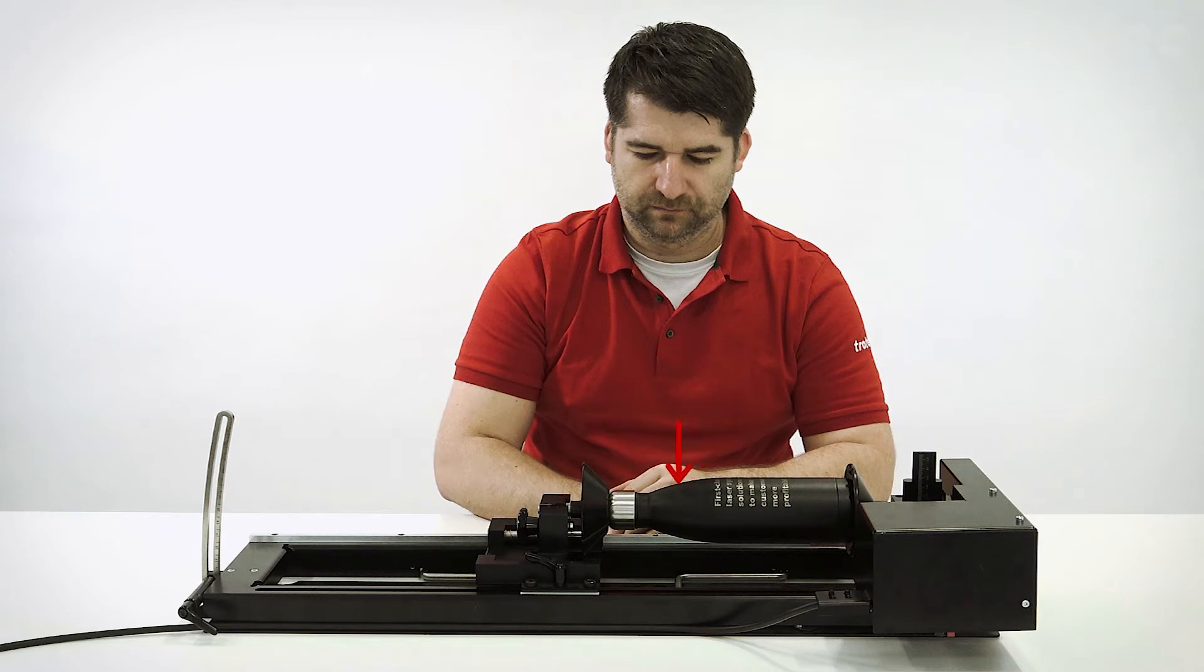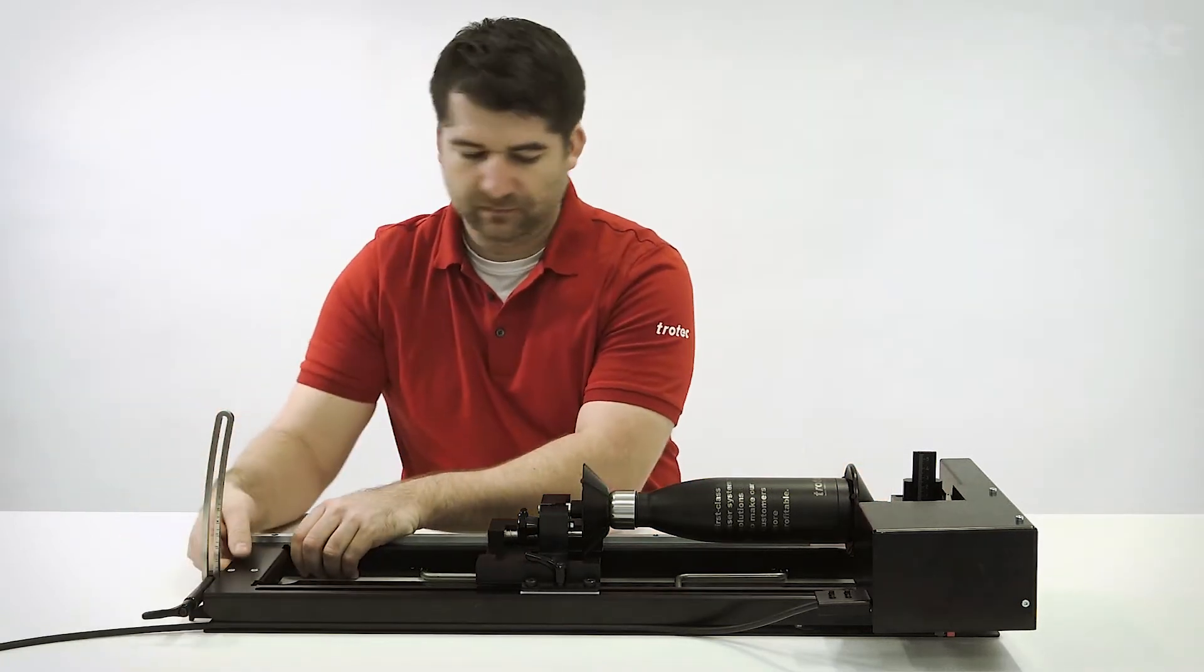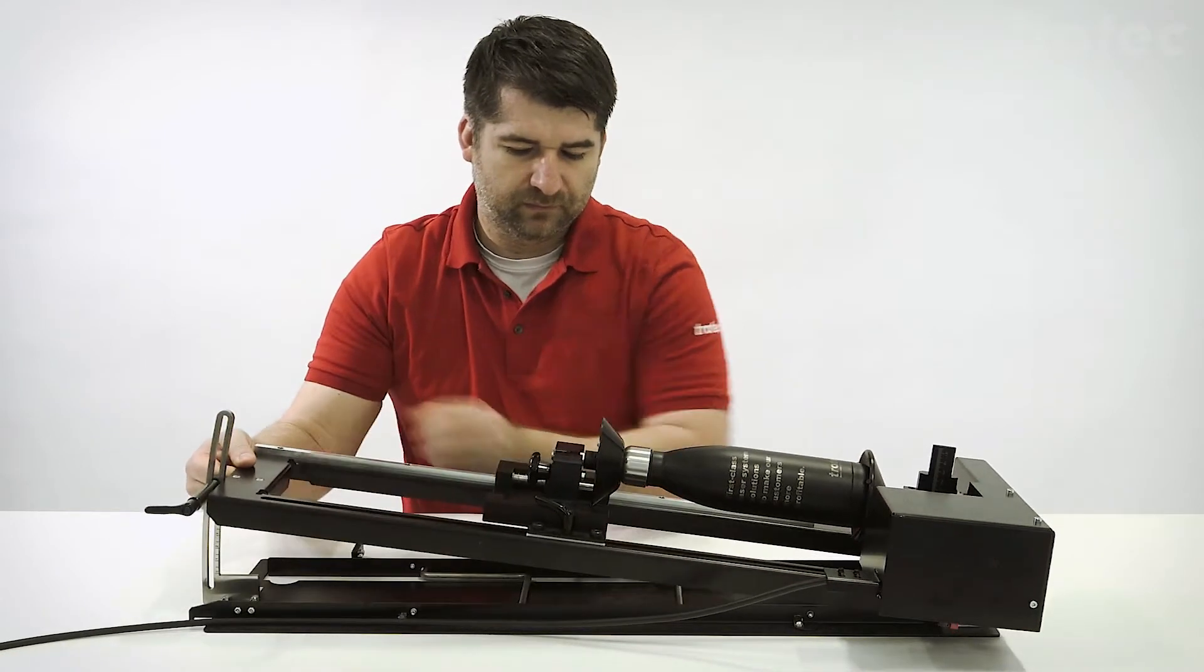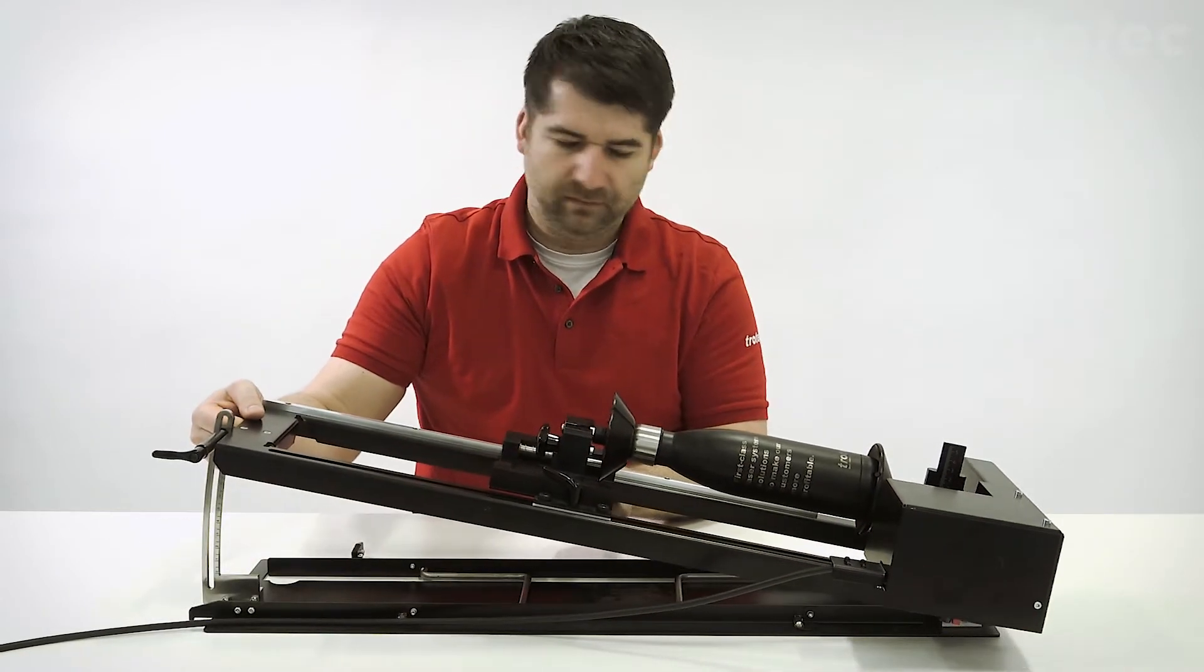If you would like to engrave for example here, you can see that this area will not be flat in terms of the focal length. In such a case you can tilt the rotary like this.